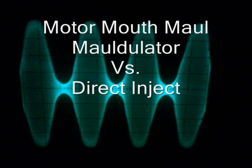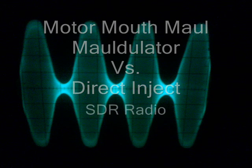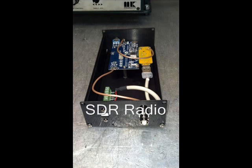Joe Dury here doing a long overdue recording. I'm showing you the differences between direct inject and motor mouth modulator at different percents of modulation. I'm transmitting at exactly 8,000 Hz wide and receiving at exactly 8,000 Hz wide using my SDR receiver.